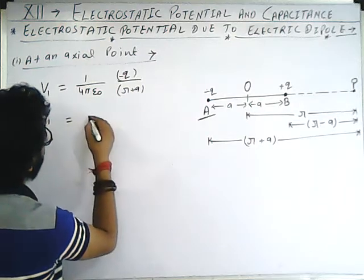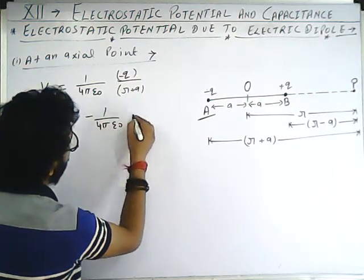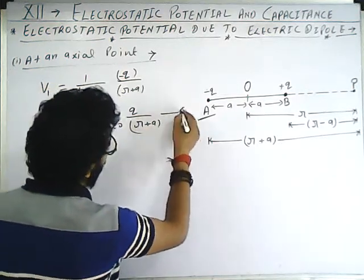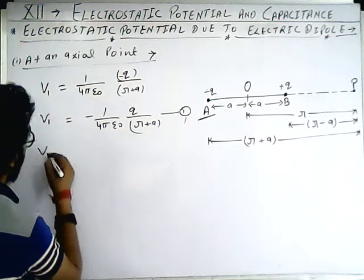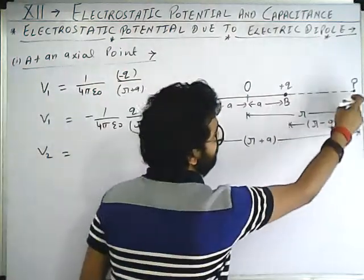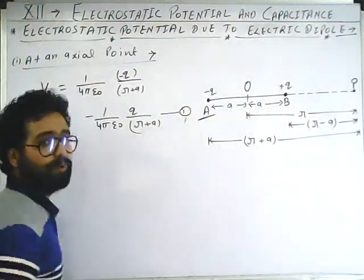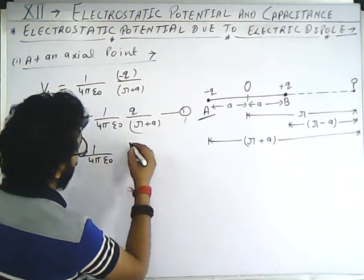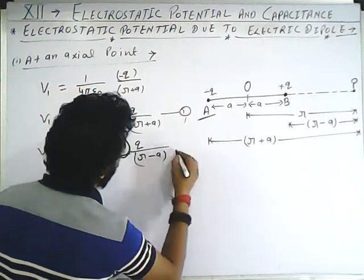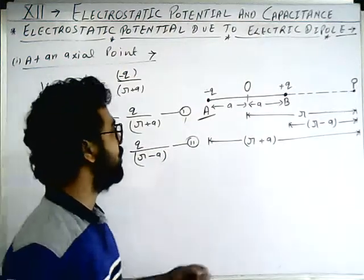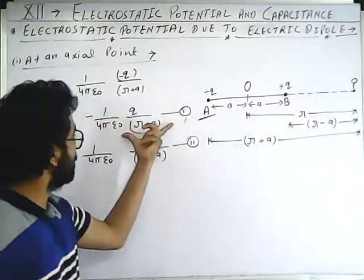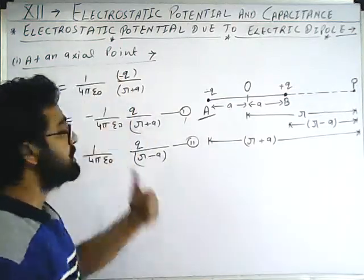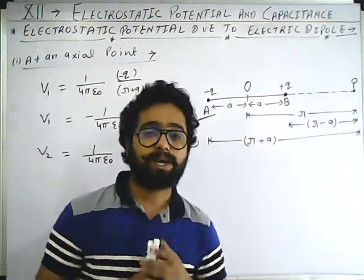We have the formula: electrostatic potential equals one upon four pi epsilon naught, q upon r. For the minus q charge, V1 equals minus one upon four pi epsilon naught, q upon r plus a — this is equation number one. Now V2 is the electrostatic potential at P due to the plus q charge, which equals one upon four pi epsilon naught, q upon r minus a — equation number two.